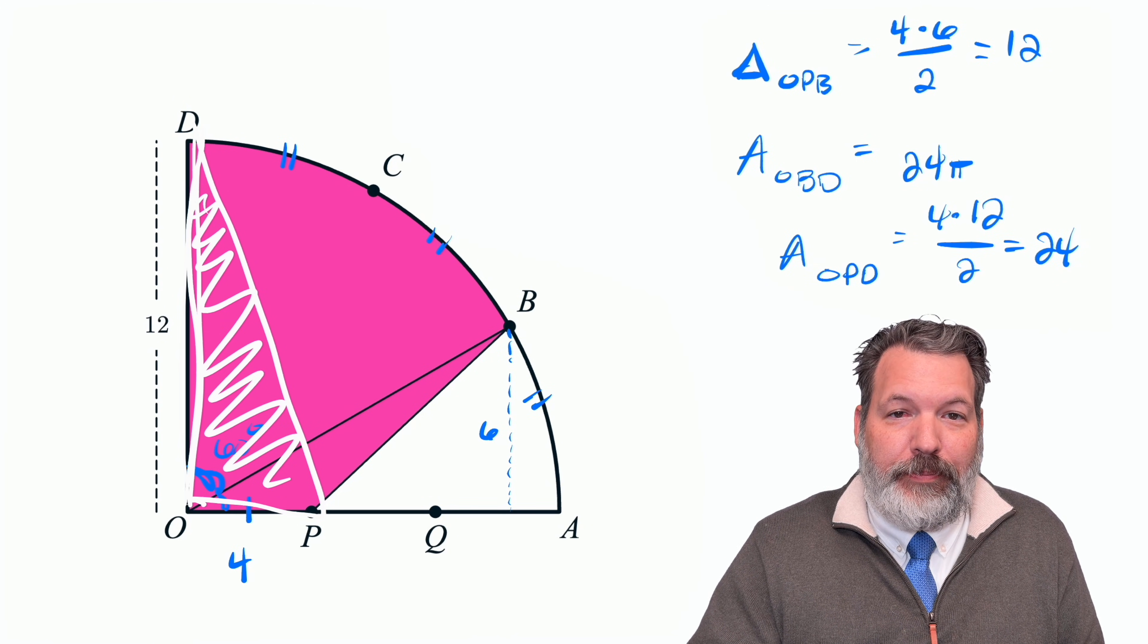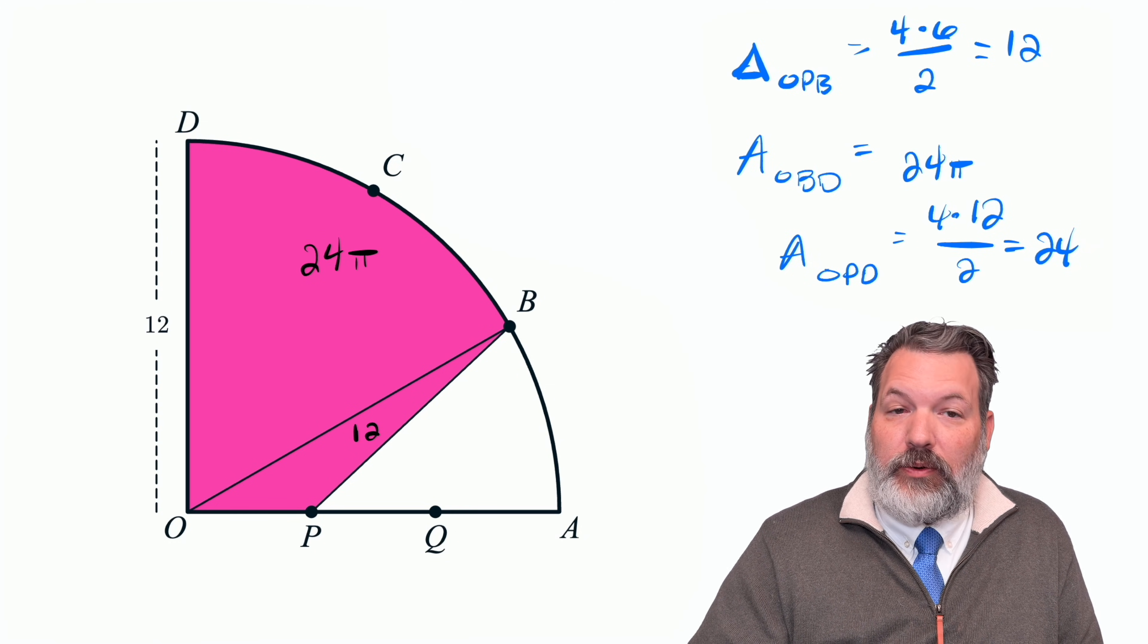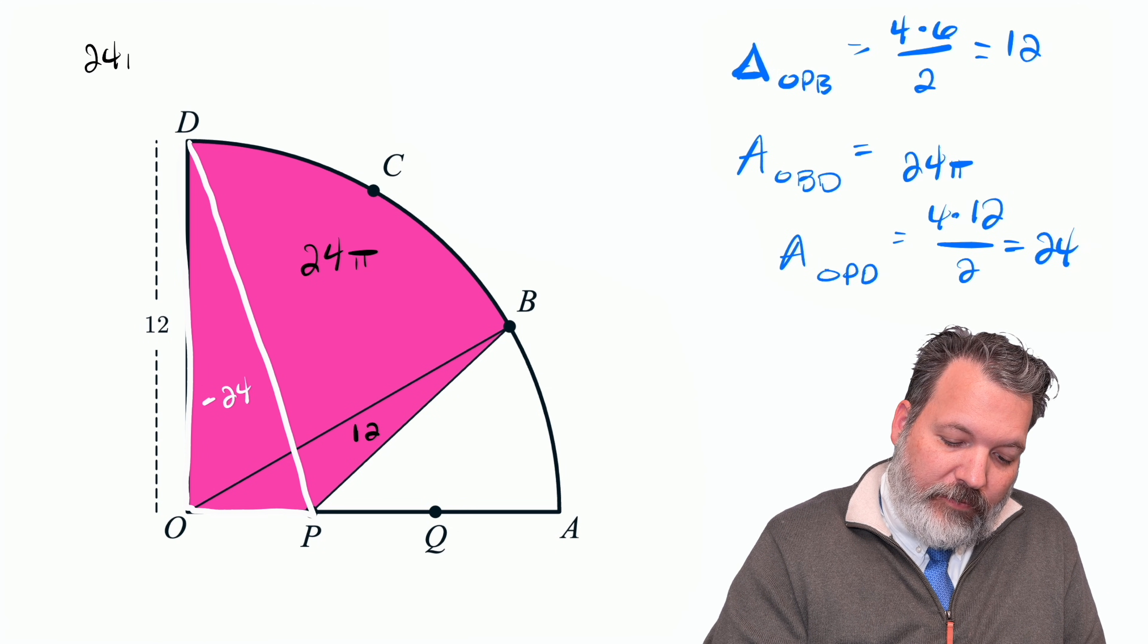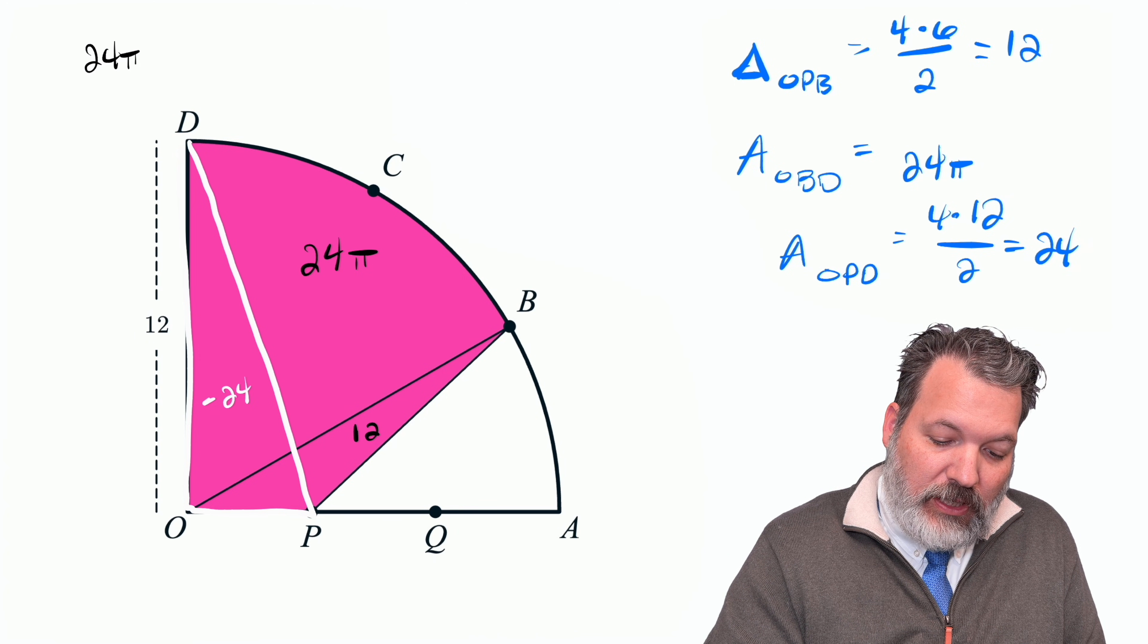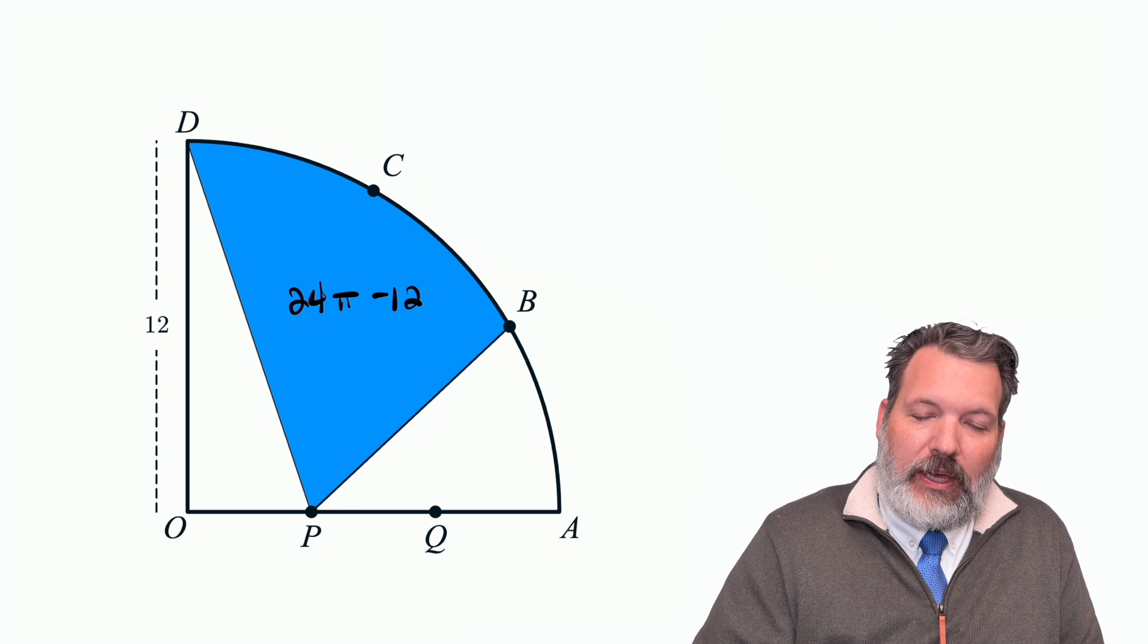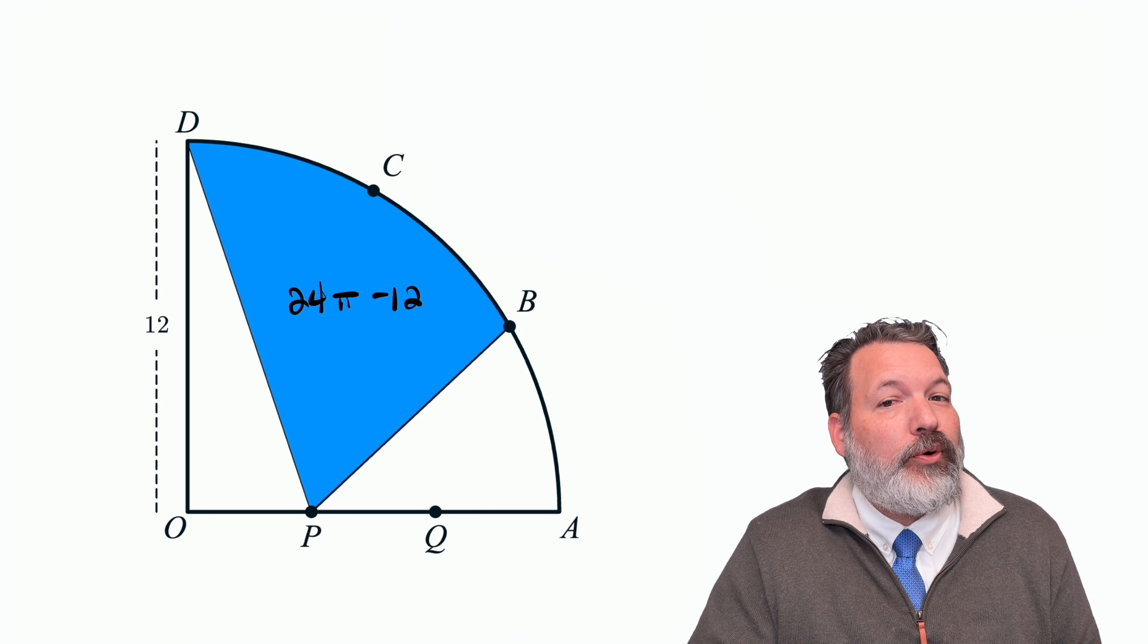And we're now ready to put all the pieces together. The area of OPB, which we figured out was 12, plus the area of this sector OBD, which we figured out was 24 pi, minus the area OPD, which we figured out was 24, gives us a total area of 24 pi plus 12 minus 24, or when we simplify just a little bit more, 24 pi minus 12. And so, there you have it. The blue shaded region we were interested in from the beginning does have an area that we can calculate as 24 pi minus 12, no trigonometry or polar coordinates required.